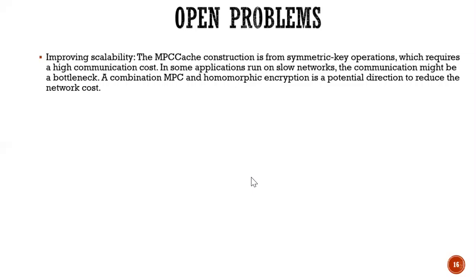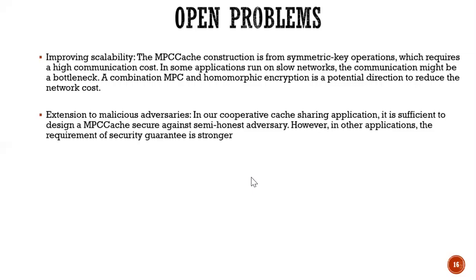So the question here is how to combine MPC with other like homomorphic encryption to reduce the network costs. And the second question here is how to extend our work for malicious adversaries. So in the caching applications, I think it's okay. I mean, it's sufficient to design the MPC cache secure against semi-honest adversaries.